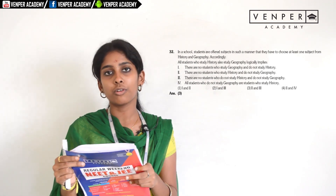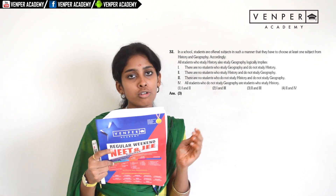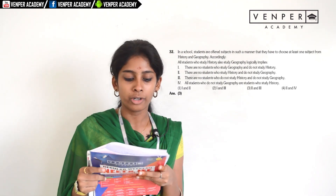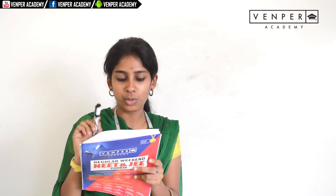Question thirty-two: all students who study history also study geography. Statement two — there are no students who study history but not geography — is logically correct. Statement three — there are no students who do not study history but also do not study geography — is also logically correct. Statement four — all students who do not study geography study history — is incorrect. Statements two and three are right, so the answer is the third option.